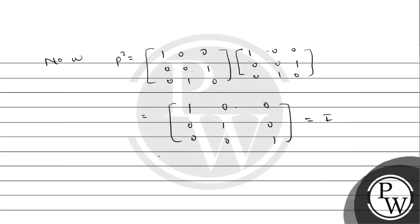Since P squared equals the identity matrix, P is an involutory matrix. This implies we can find the PE matrix. The PE matrix has rows 1, 0, 0; 0, 0, 1; 0, 1, 0.